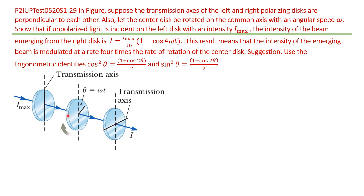If unpolarized light is incident on the left disk with intensity I-naught, the intensity of the beam emerging from the third disk is I equal to I-naught over 16 times the quantity one minus cosine of 4 omega t.